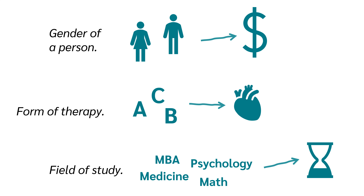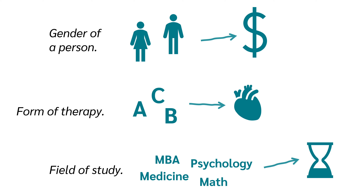Salary, blood pressure and length of study will then be the dependent variables. In each of these cases, you test whether the factor has an effect on the dependent variable. Since you only have one factor in these cases, you would use a one-way ANOVA.